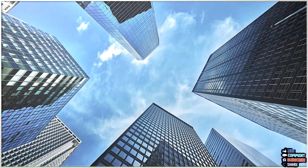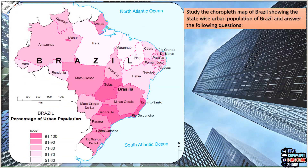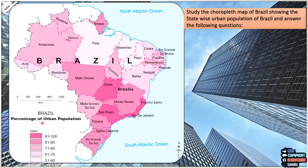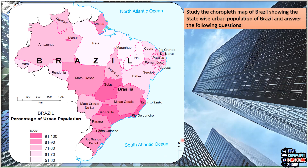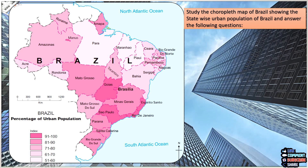Now let's move on to the choropleth map given on page number 50. We will observe the map and answer the following questions. Before we move ahead, keep in mind: while drawing a map during an exam, you need to write the title, mention the index properly and clearly, and also mention the direction of the map. These things will fetch you full marks.